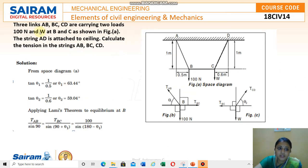The next numerical is three links AB, BC and CD are carrying two loads, 100 Newton and W at B and C as shown in the figure. The string AD is attached to the ceiling. Calculate the tensions in AB, BC and CD. They are telling us to find TAB, TBC and TCD. Now I will teach you about the FBD. In my next lecture video I will tell you about how to solve that.